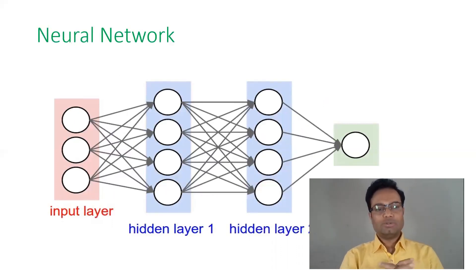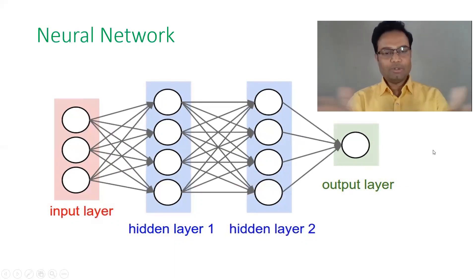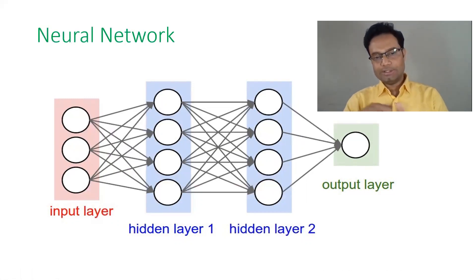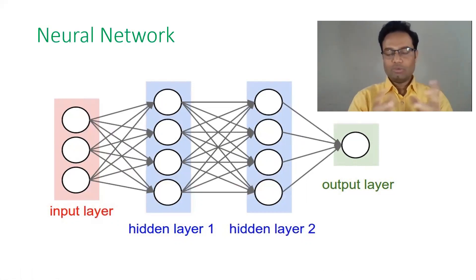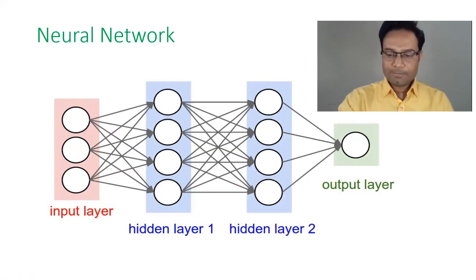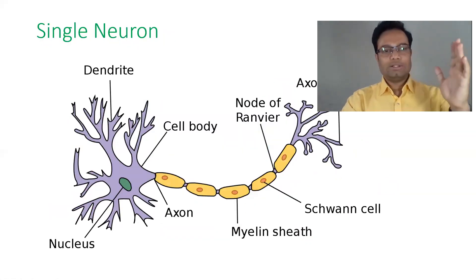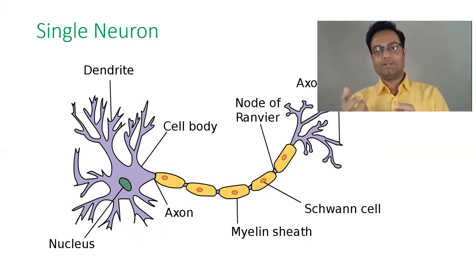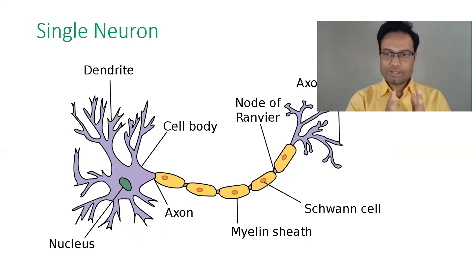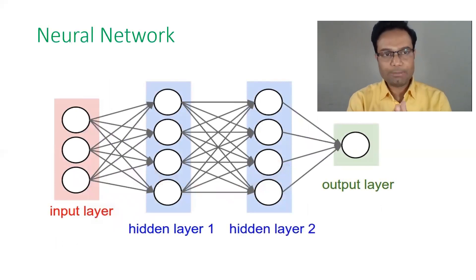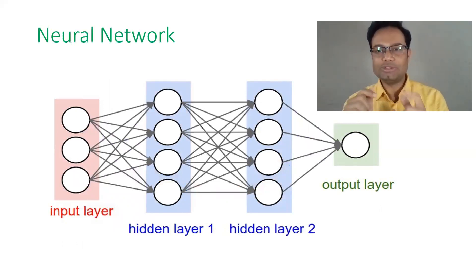What is the neural network? We have the input layer, the final output layer, and in between we have many hidden layers. Through the input layers, we pass the input features. They process it in the hidden layers and give a final output. Here also we do the calculations and pass the signal to the next layers. The moment they take the signal, they process it and decide whether to pass this signal - to fire this signal through the axon to other neurons or not. This job should also happen in the neural network.